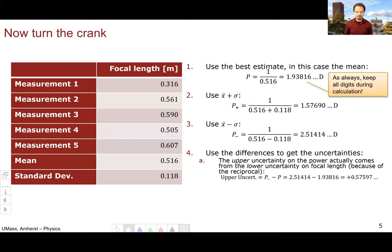So our upper uncertainty, we take p minus, which is where we use the mean minus the standard deviation, and subtract that from our central value to get plus 0.57597.